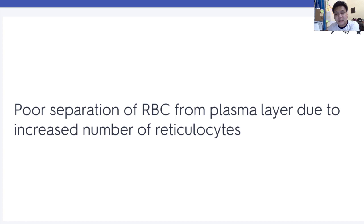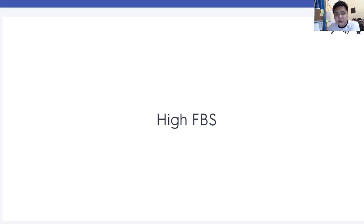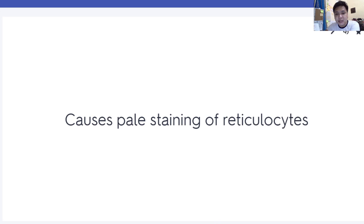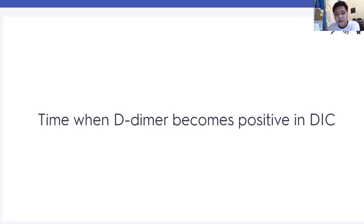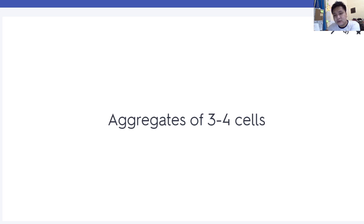High FBS causes darker staining of reticulocytes. Heparin causes pale staining of reticulocytes. 4 hours is the time when you expect D-dimer to become positive after the onset of DIC. Myelocytes represent the dawn of neutrophilia.